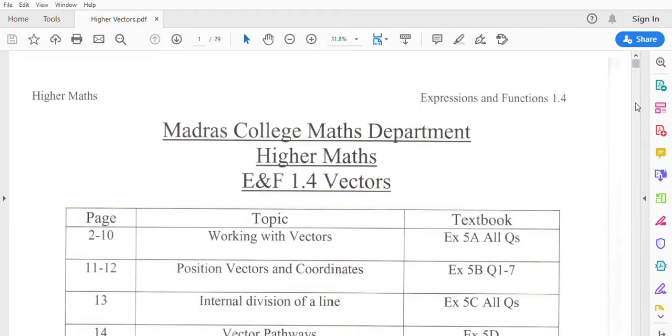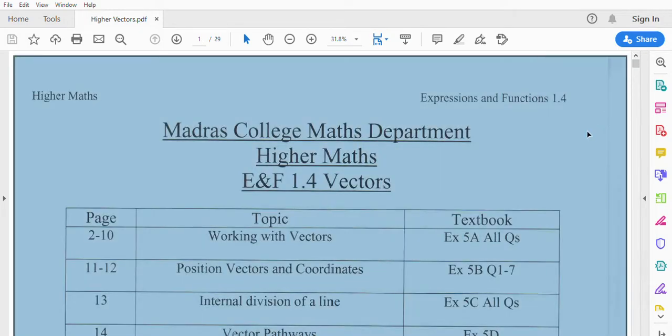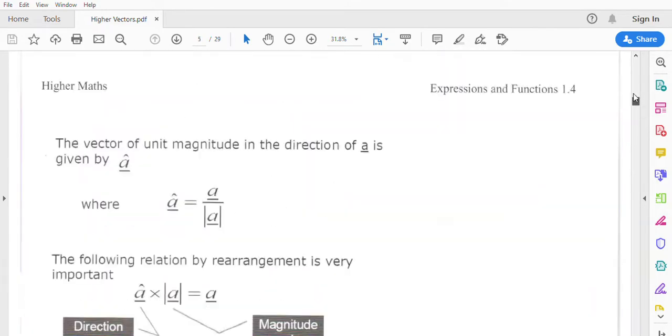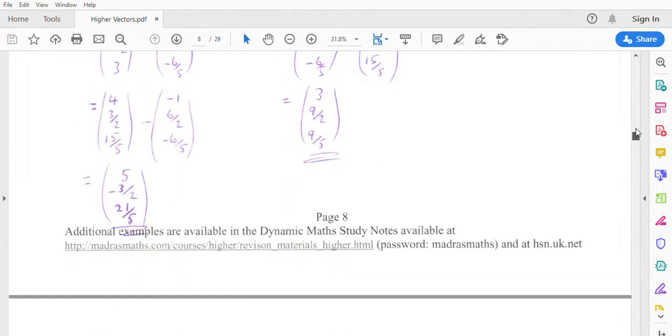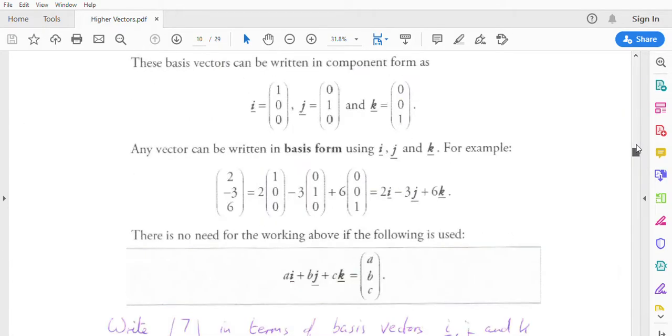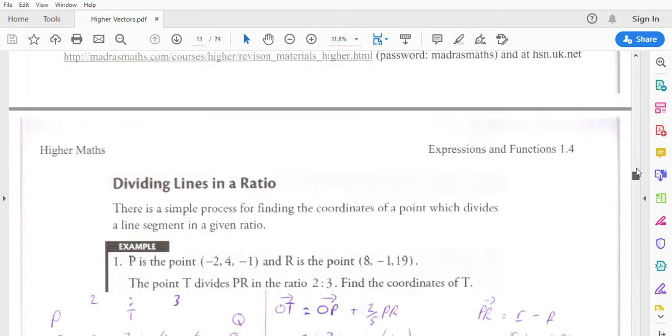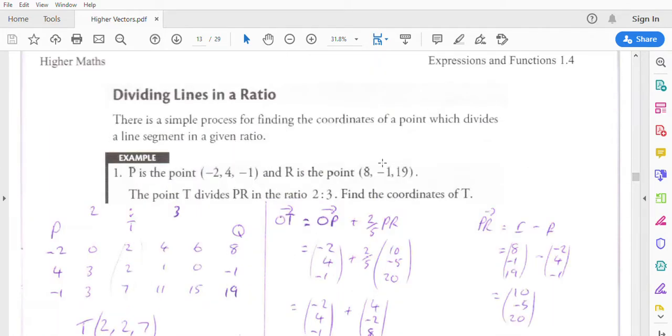Welcome back to the vector section of the SQA's Higher Maths course. We're going to look at the internal division of a line today, which from the Leckie and Leckie textbook will be exercise 5C, which is on page 13 of the notes.